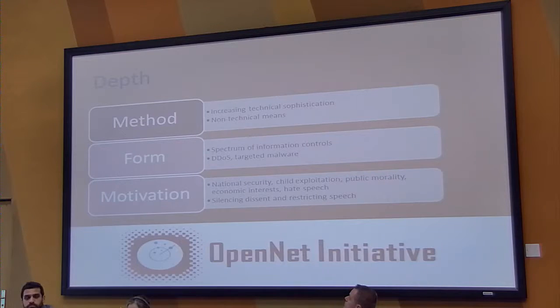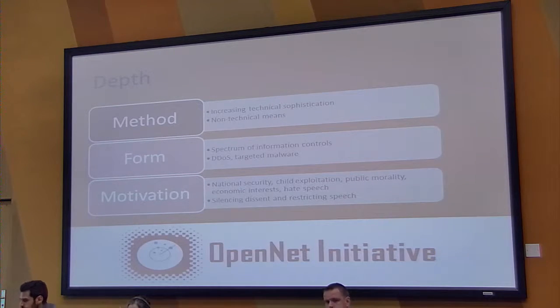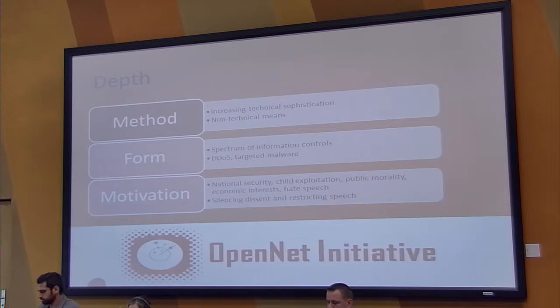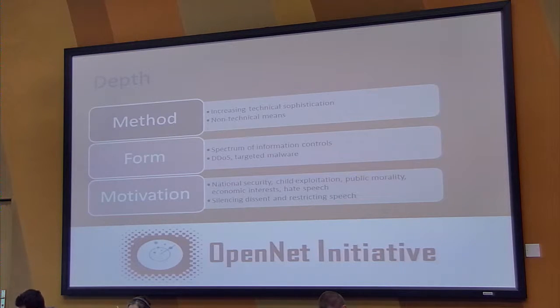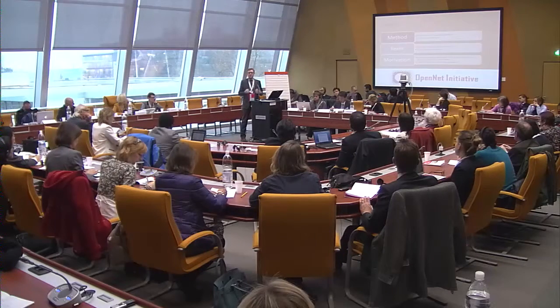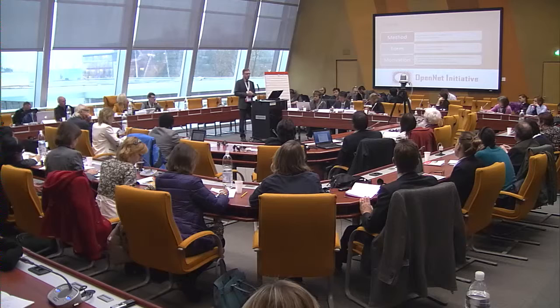We see a change in the form of how censorship and surveillance are applied. We see censorship and surveillance as being just parts along a spectrum of what we call information controls — attempts to manipulate, deny, and disrupt access to information online. We see the growing role of things like denial-of-service attacks to render websites inaccessible, and targeted malware attacks to perform targeted surveillance on sensitive individuals and groups.